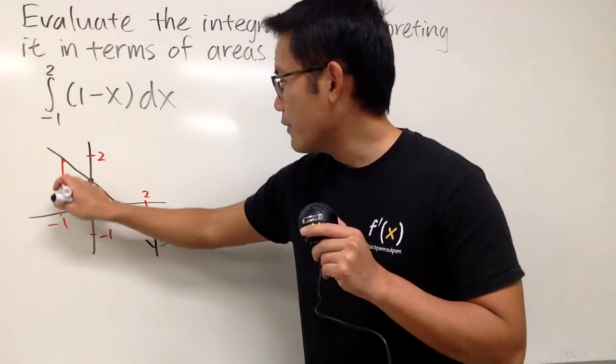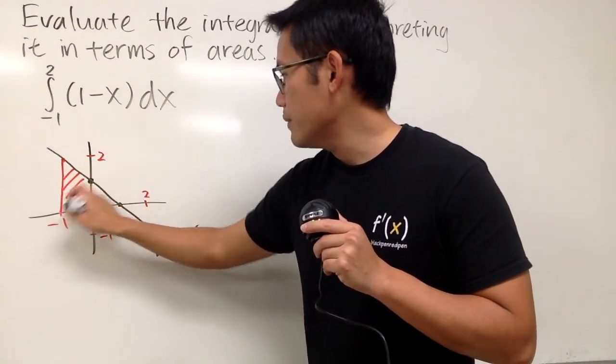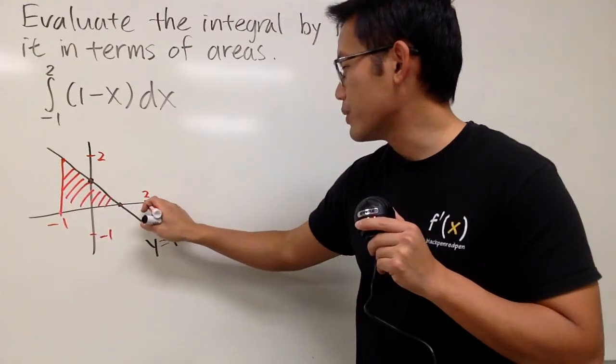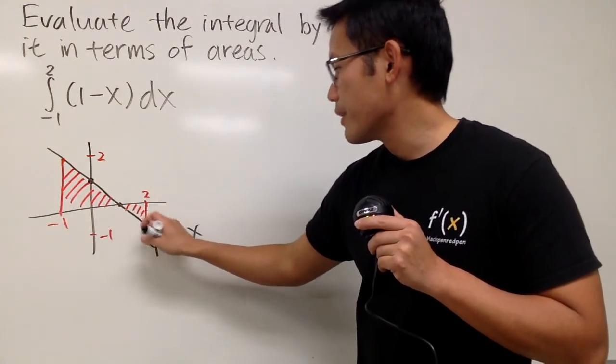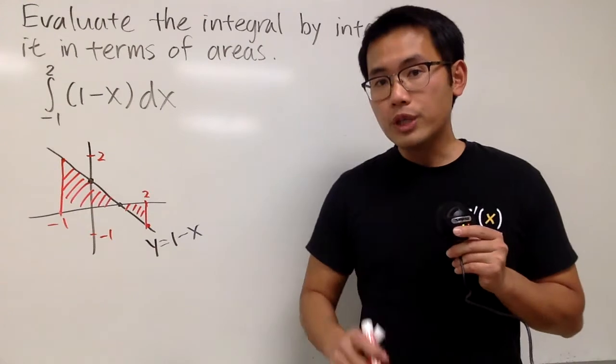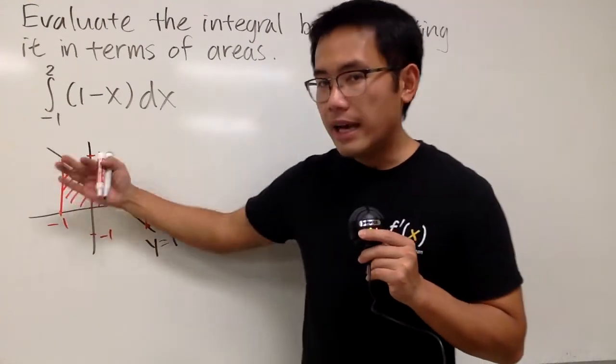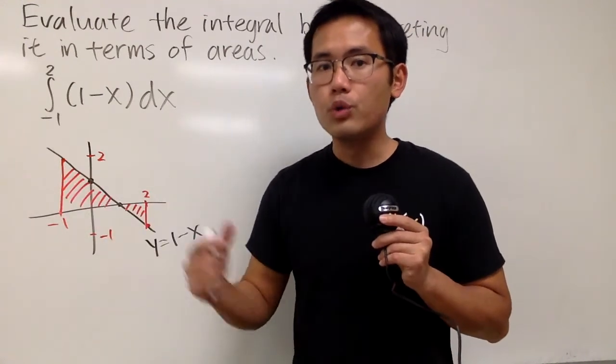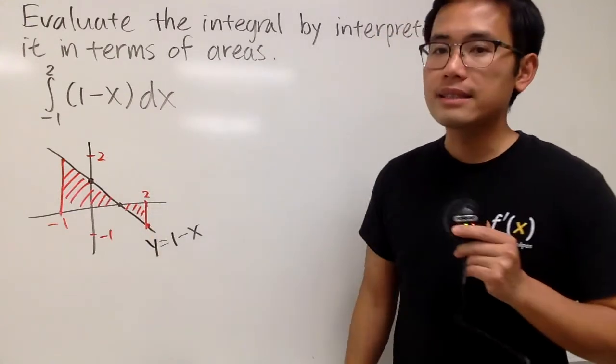So we are going to calculate the area from here to here, and then we are going to find the area from here to here. That's pretty much it. One thing to keep in mind, anything above the x-axis, you will get positive value for its integral, right? And then anything below the x-axis, you will get the negative value for its integral.